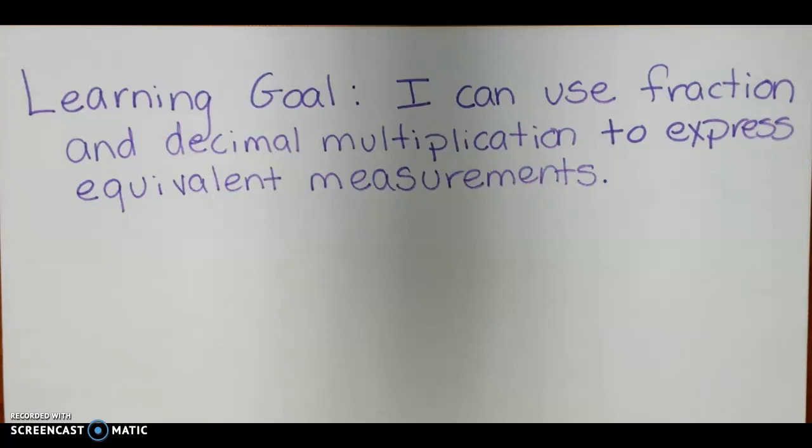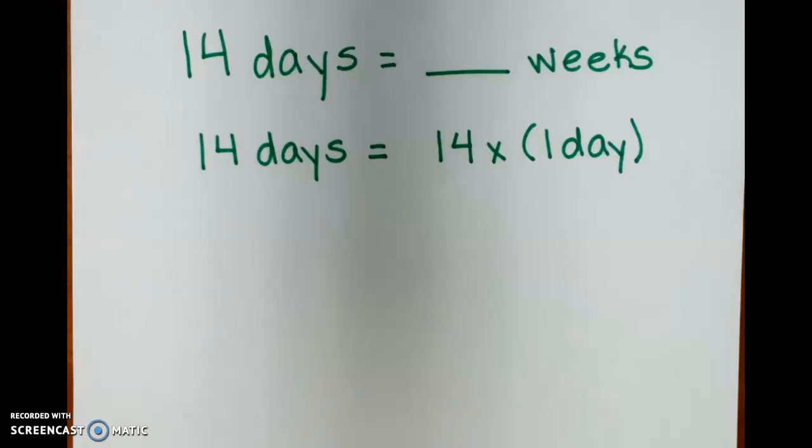So what does that mean? That means that we can take a fraction, let's say one seventh, because one day is one seventh of a week, and multiply it times a whole number to get an equivalent measurement. So that'll make more sense when you see our examples.